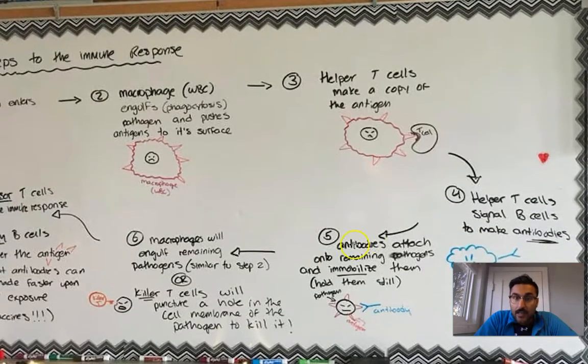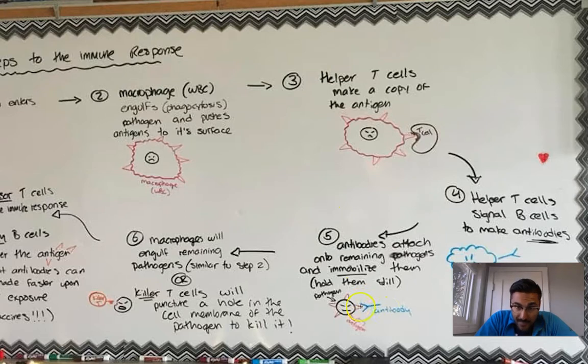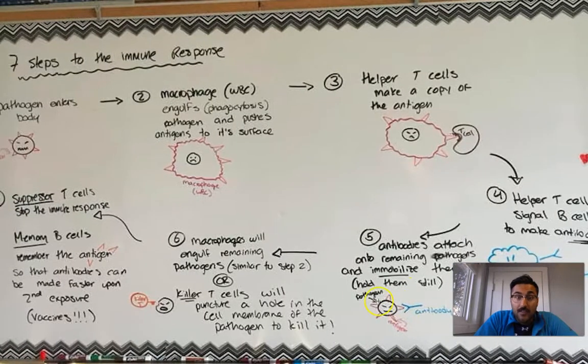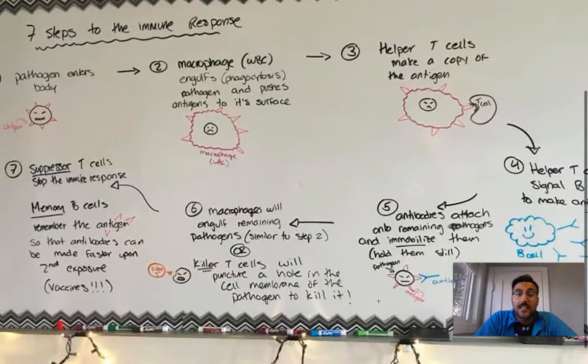Step number five, those antibodies that we just made in step four by B cells are going to swim throughout the bloodstream and find other pathogen cells. And when the antibody finds the pathogen, it's going to bind to the matching antigen that it was designed for, and it's going to immobilize or stop the pathogen from moving, it holds it still. When the antibody holds the pathogen still, one of two things can happen.